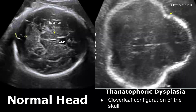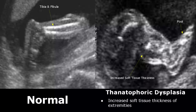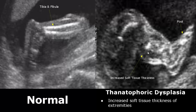Thanatophoric dysplasia also consists of a cloverleaf configuration of the skull — this is how the skull shape will look. On the left side we can see normal soft tissue thickness in the legs, but in the image on the right there is increased soft tissue thickness in the extremities. If we find all or most of these features, we can diagnose thanatophoric dysplasia.